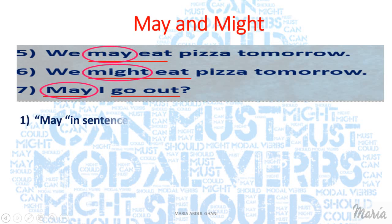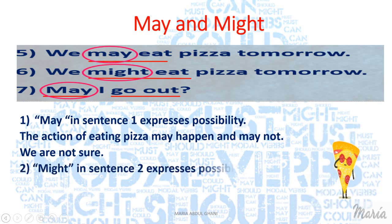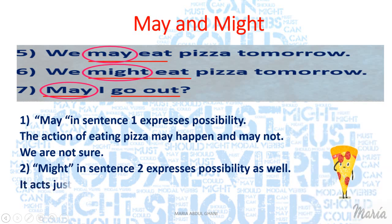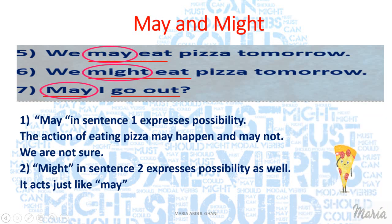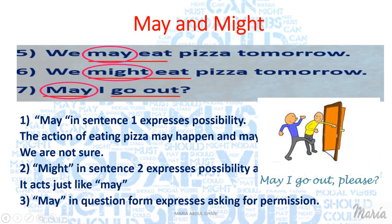May and might: May in sentence one expresses possibility — the action of eating pizza may happen and may not. We are not sure. Might in sentence two expresses possibility as well; it acts just like may. May in question form expresses asking for permission.